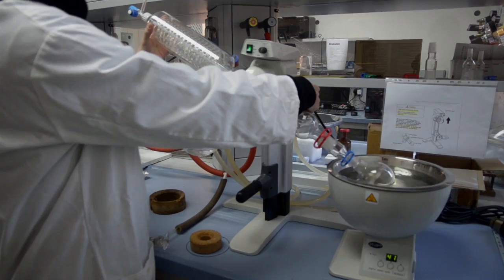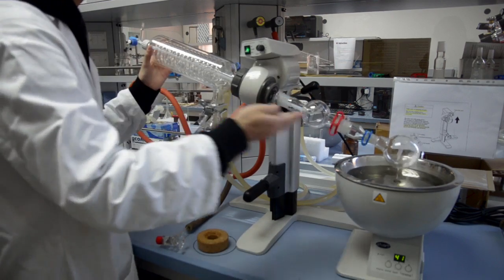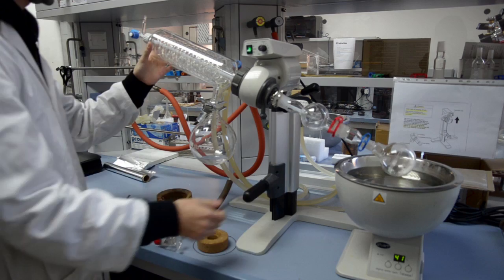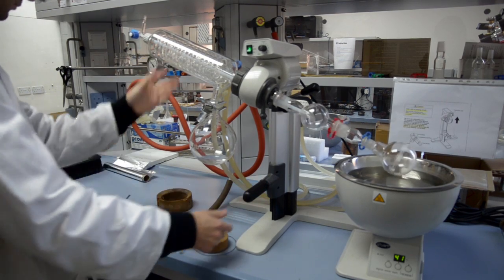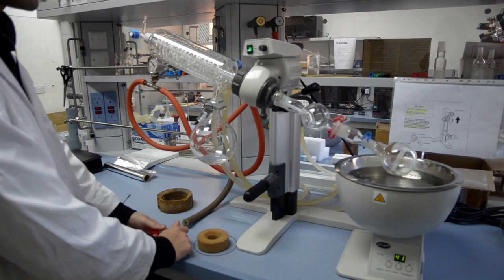Once done, adjust the angle to near horizontal if necessary to prevent backflow of the solvent. Slightly open the vacuum valve and close the vacuum line completely while still leaving the rotation on.